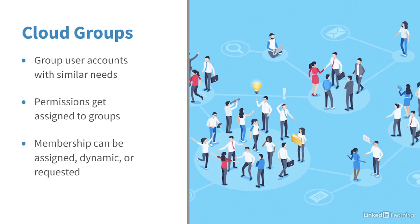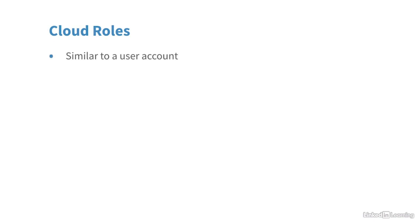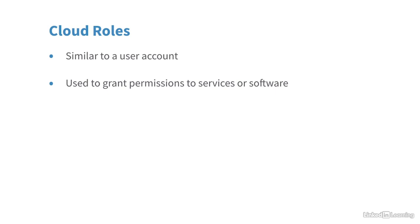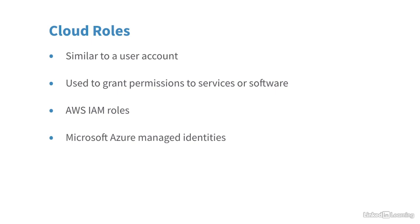Another aspect of cloud identity management are cloud roles. Cloud roles are similar to a user account, but the idea is to use the role to grant permissions to services or software. Instead of creating dummy user accounts, you create roles, assign permissions to them, and software uses that role. In Amazon Web Services, that's called an IAM role. In Microsoft Azure, similarly, we have what are called managed identities — which might be associated with a virtual machine that needs access to read cloud stored data.